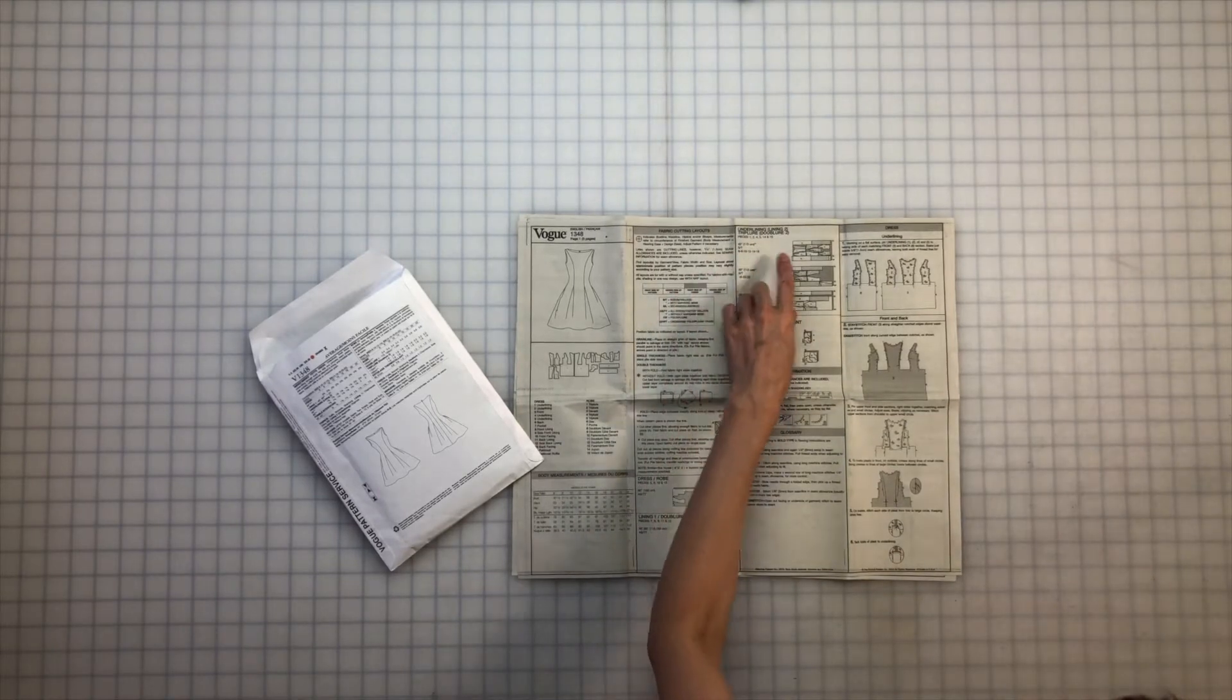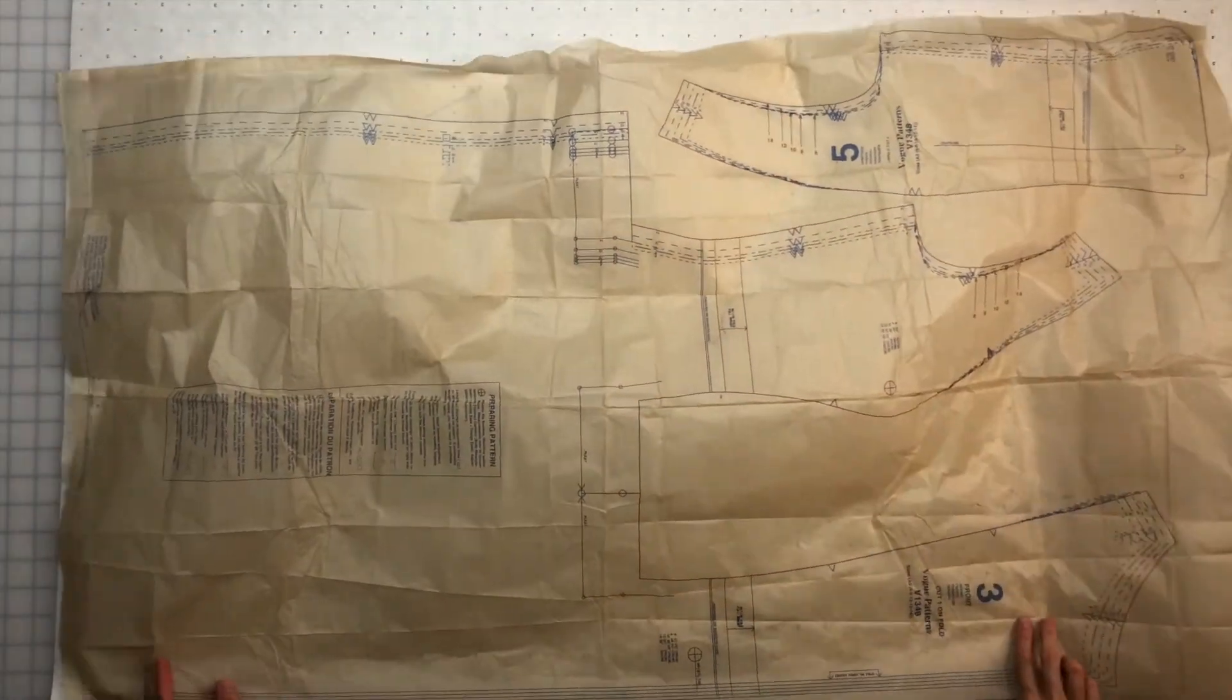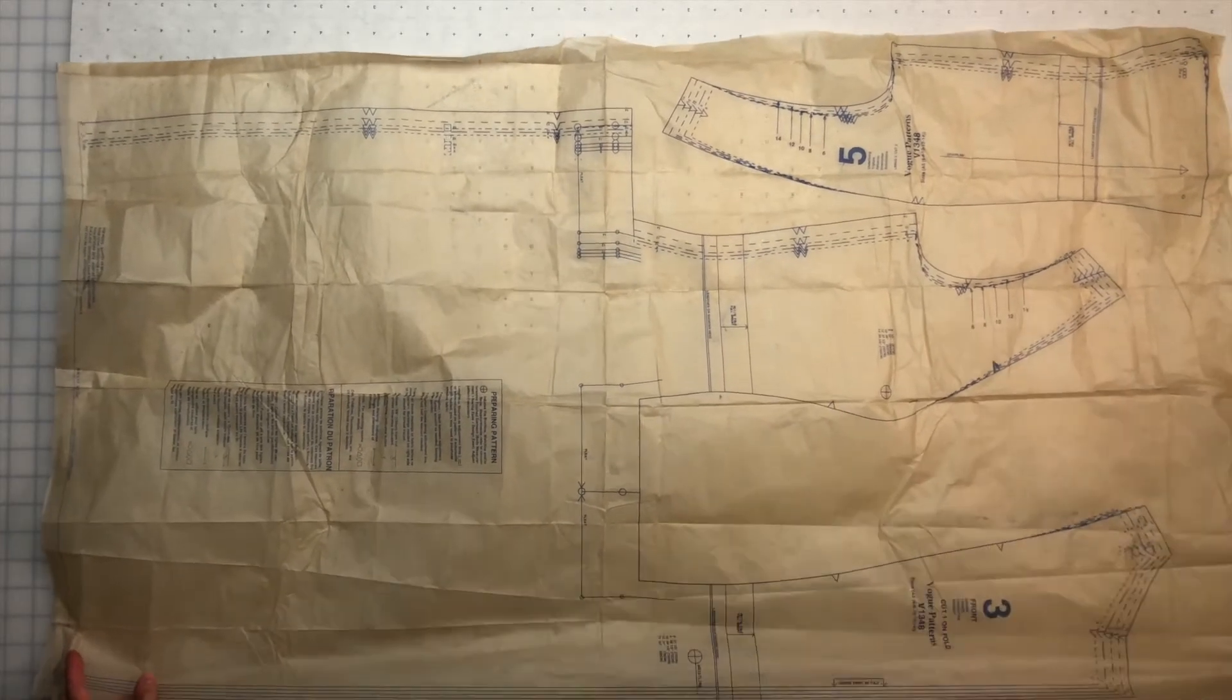Right off the bat I know I want to eliminate this underlining layer. It looks like its main purpose is to hold up the pleats since there's no waist seam, so instead I'm going to use a modified waist stay. I also want to put a twist on the shoulders.